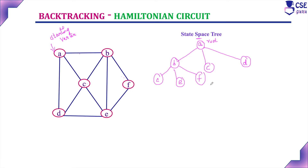We can visit any vertex, but whenever considering a vertex in that particular path, that vertex should be visited exactly only once, not more than once. From C, considering the path A to B to C, the remaining unvisited vertices are D, E, and F. From C, the possibilities are to visit D or E. In this path, both are not visited, so you can visit either D or E. If visiting D, the unvisited vertices are E and F.